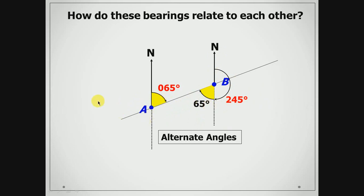So those are some key things we look for when doing bearings: we try to identify alternate angles and angles on a straight line.